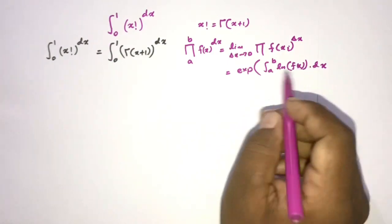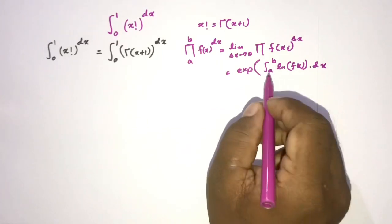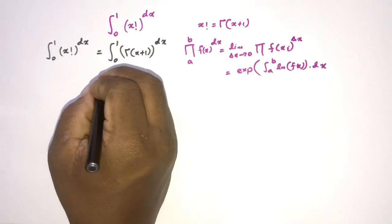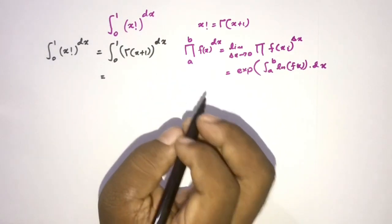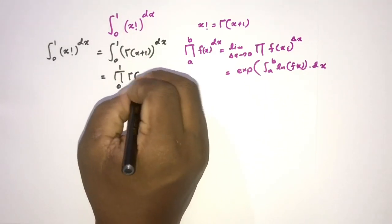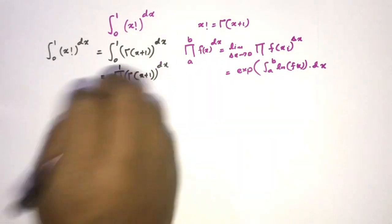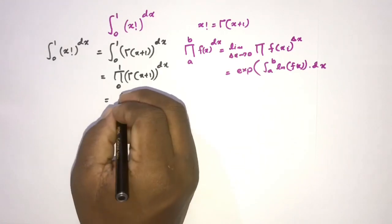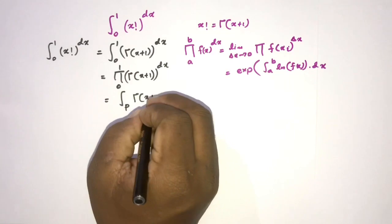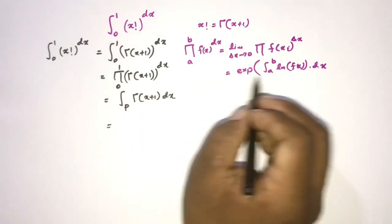In previous videos we discussed product integral Type 1, Type 2, and Type 3 — I will add the link in the description. Therefore we can write this as the product from 0 to 1 of gamma of x plus 1 raised to dx.